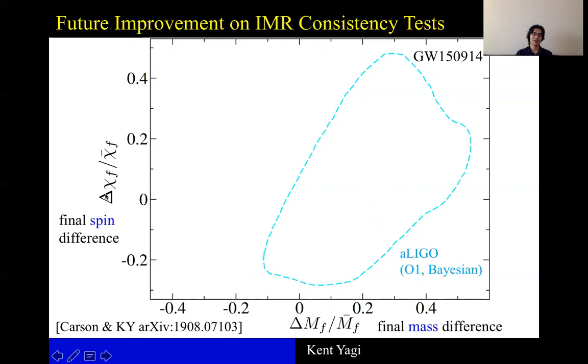If GR is correct, then there shouldn't be any difference between inspiral estimated value and merger-ringdown estimated value. So the GR point corresponds to the origin. The cyan ellipse corresponds to the one obtained by the LIGO-Virgo collaboration. So this error ellipse contains the origin here, meaning that this event is consistent with GR.